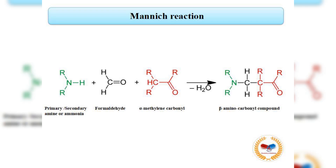The Mannich reaction. In this reaction, formaldehyde and a primary or secondary amine, or ammonia, is converted to a beta-aminocarbonyl compound.